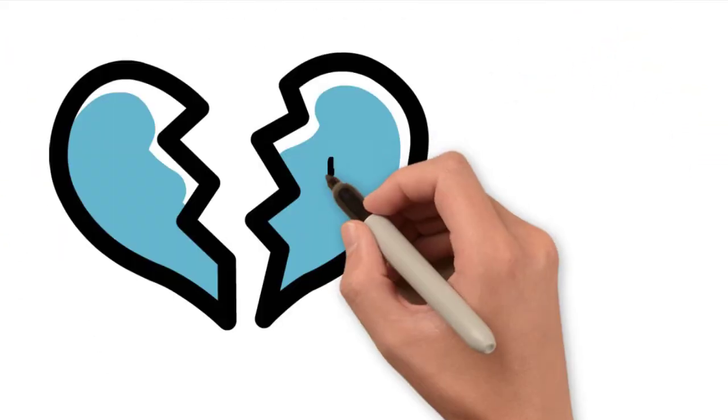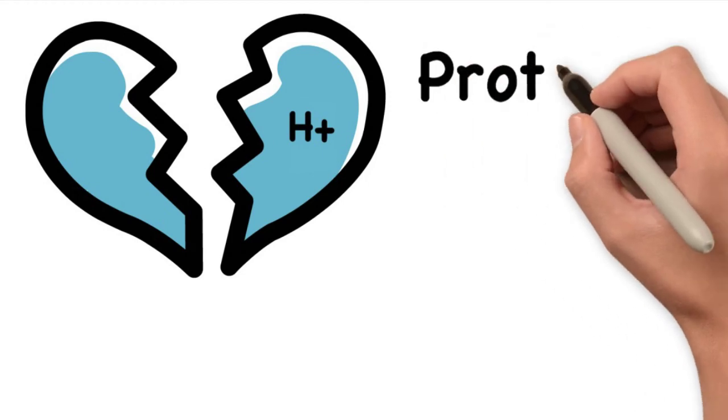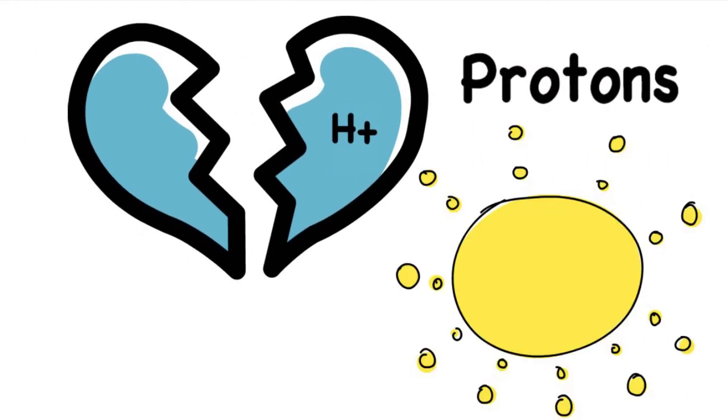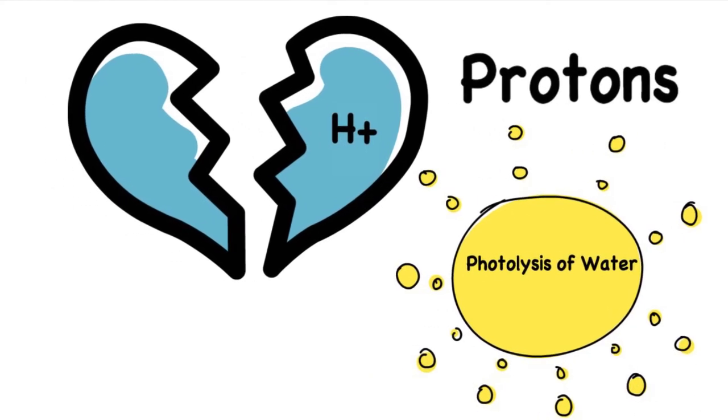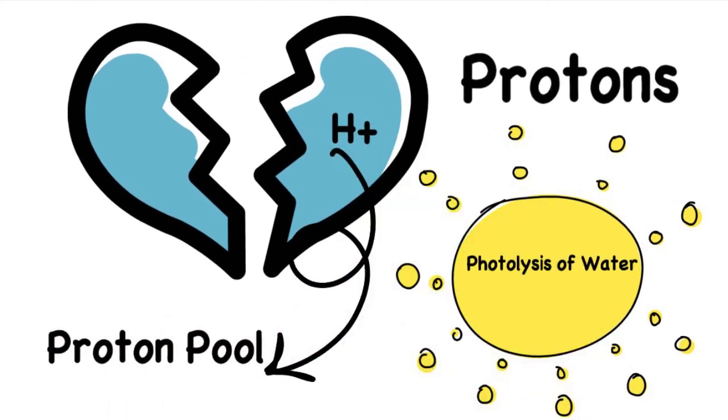So what about those H+ ions, the hydrogen ions? The protons are formed by the photolysis of water. This is a process whereby water molecules are split using light energy and when those protons are formed, they are then sent to a proton pool.